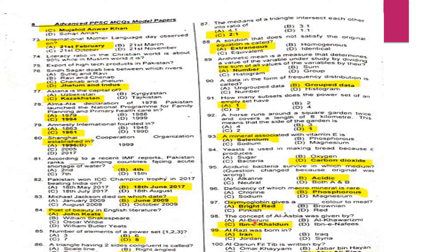MCQ 97: Oxyhemoglobin — oxyhemoglobin gives a bright red color to blood.